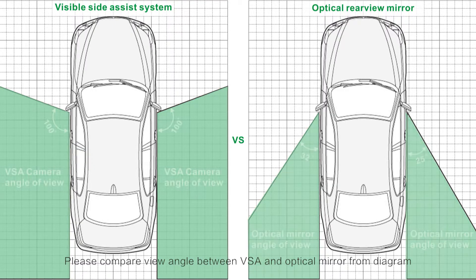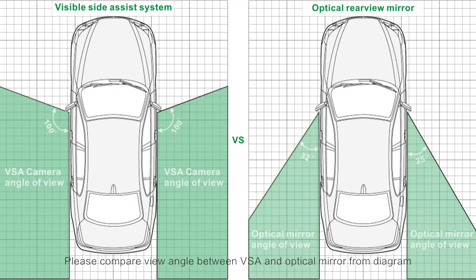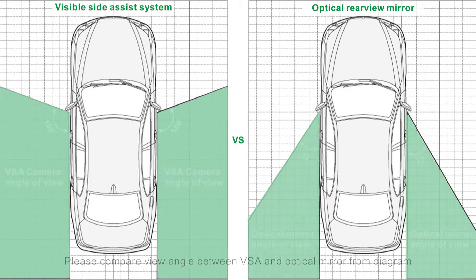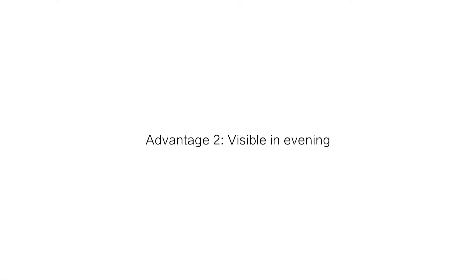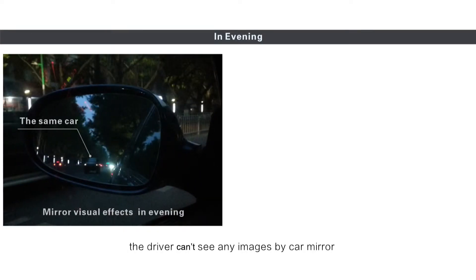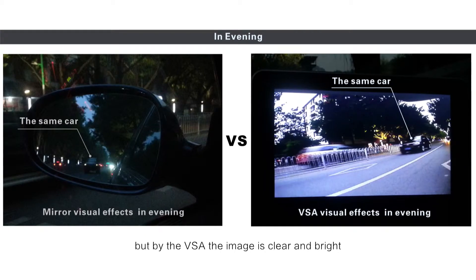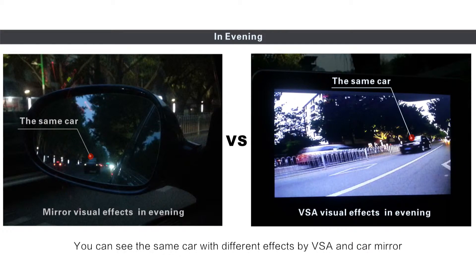Please compare the view angle between VSA and optical mirror from the diagram. Advantage 2: Visible in the evening. In the evening, the driver can't see any images by car mirror, but with the VSA the image is clear and bright. You can see the same car with different effects by VSA and car mirror.